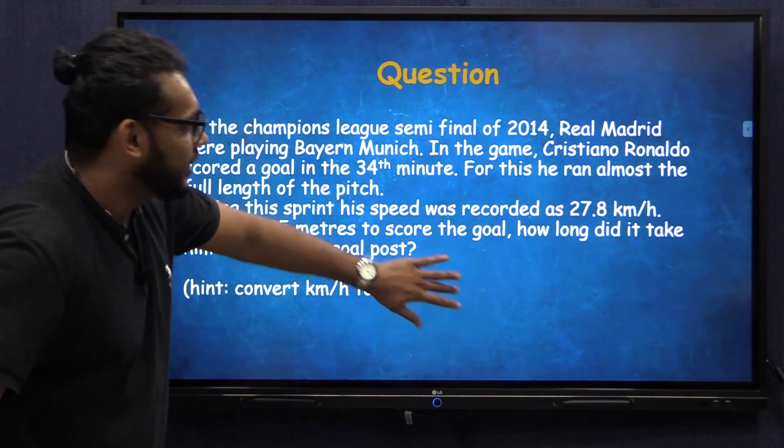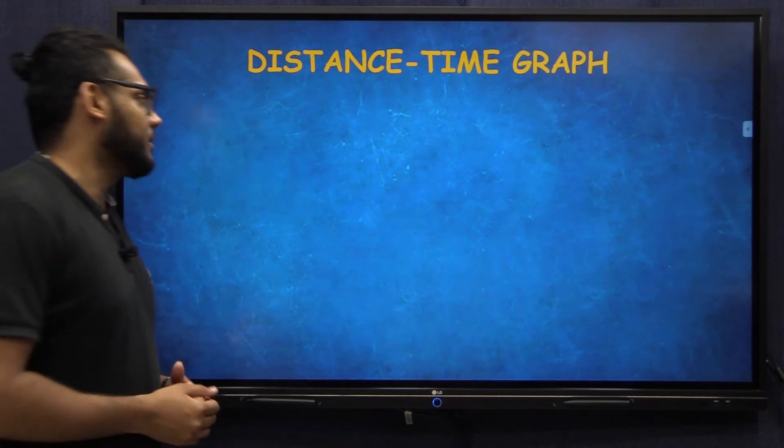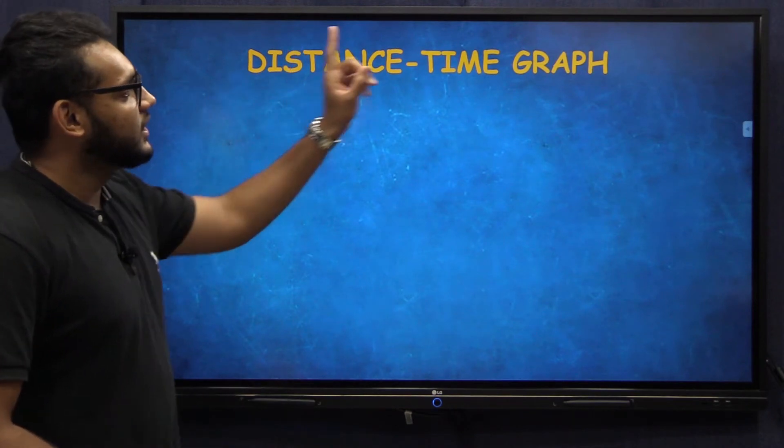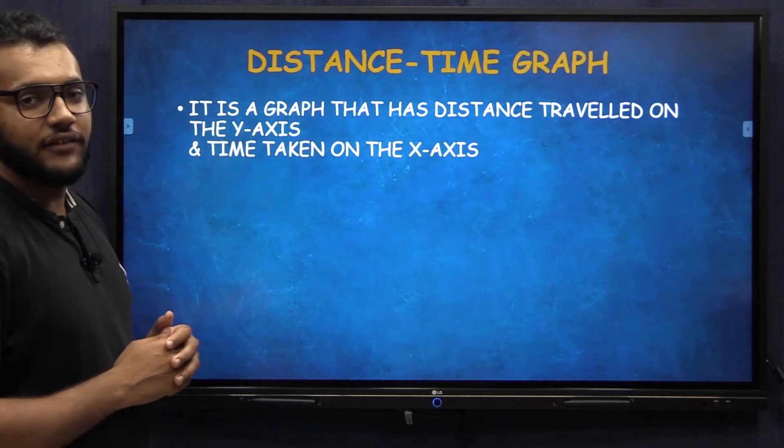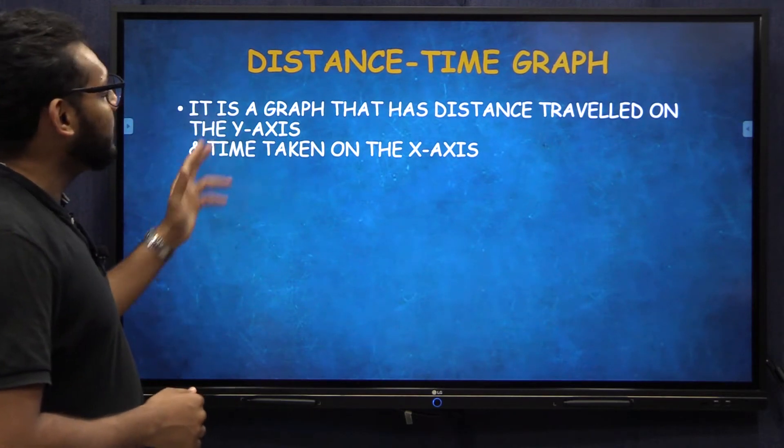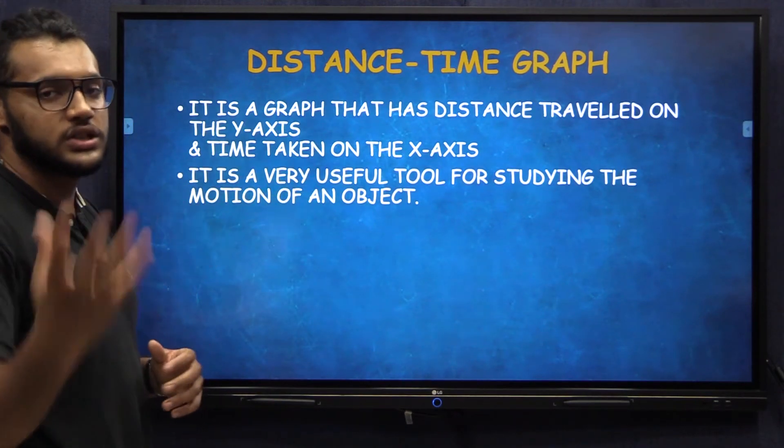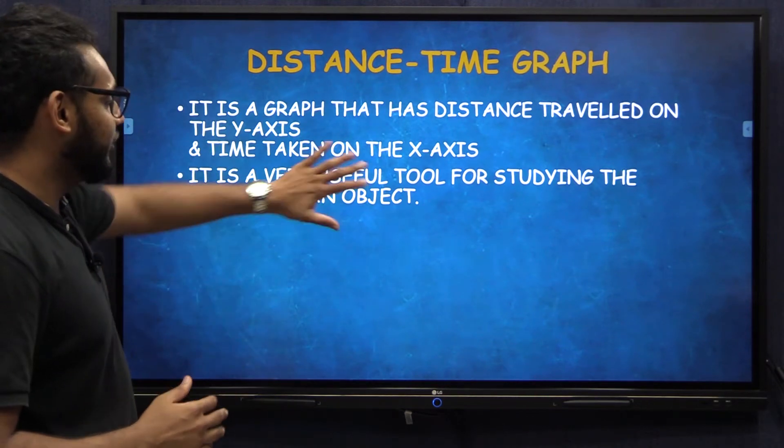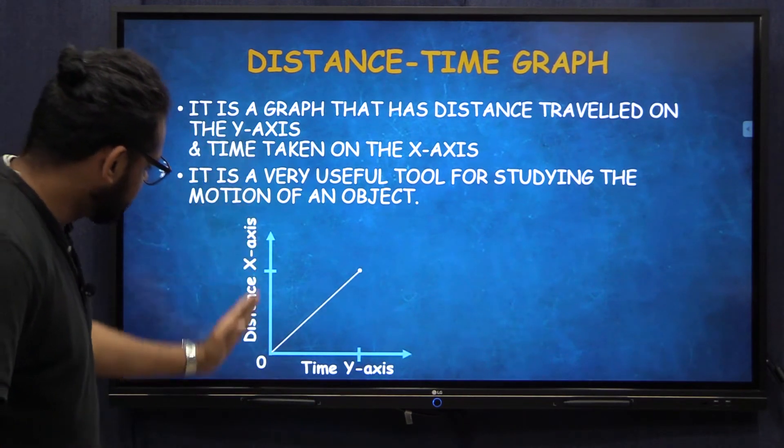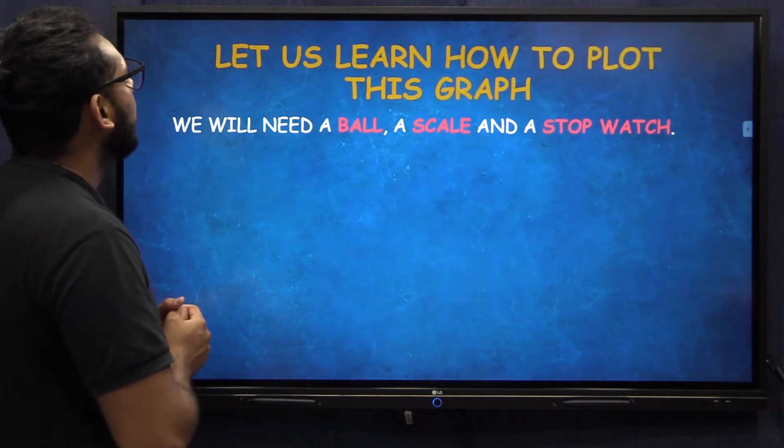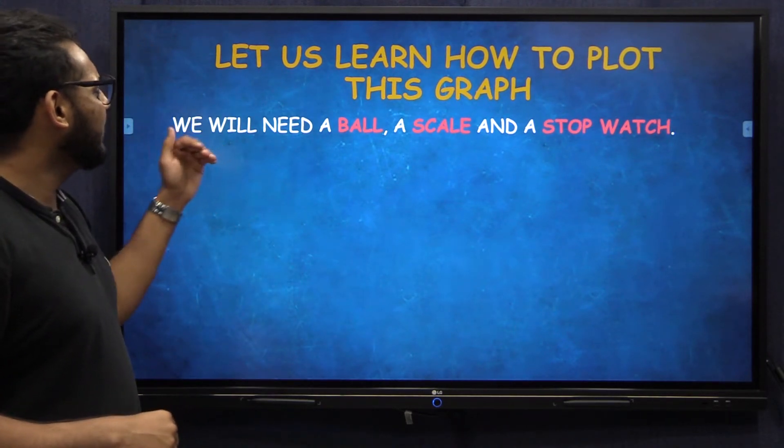Now we've learned about speed. Now let's look at a graphical representation of speed. You all know how to draw a graph. We've all learned in mathematics. Now let's look at how to make a distance time graph. What is a distance time graph? It is a graph that has got a distance traveled by an object on its y-axis and the time taken to travel that distance on the x-axis. It is very useful for studying the motion of objects. Let us look at how a graph is drawn.